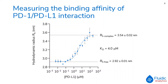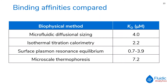The hydrodynamic radius for the unbound protein and the protein complex are also automatically calculated and displayed. The figure on screen shows an equilibrium binding curve obtained by the titration of unlabelled PD-L1 against a constant concentration of Lexifluor 488-labelled PD-1. From this, the binding affinity or KD of the PD-1/PD-L1 interaction was determined to be 4 micromolar. Here we show a comparison of binding affinity values for this interaction across a range of biophysical techniques. Microfluidic diffusional sizing on the Fluidity 1W gives a binding affinity value which is in line with those in the literature. Individual references for these values can be found in the application note on our website.